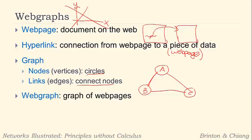And so now we can apply that to a web graph, which is just a graph of web pages. So in this sense, now the nodes themselves become web pages. So we have web pages as our nodes, which we will still draw as circles, but web pages become our nodes.